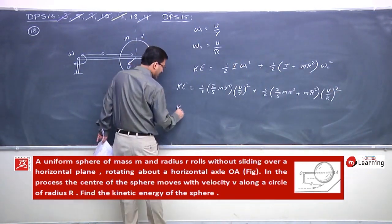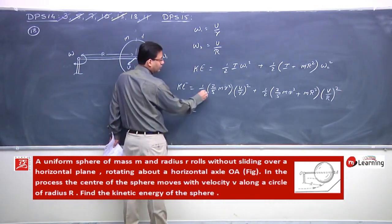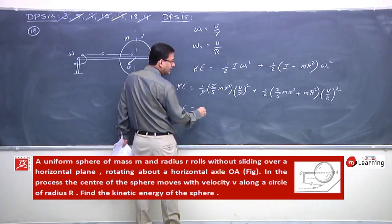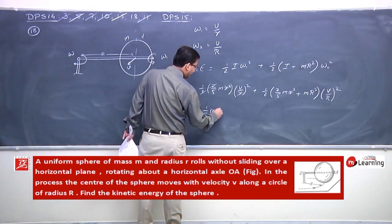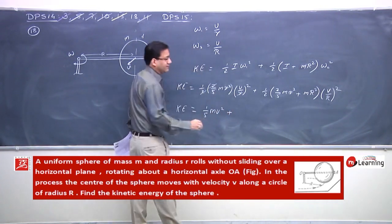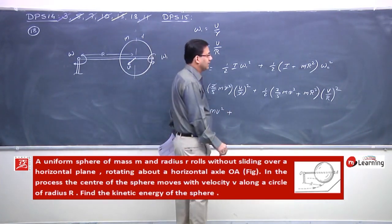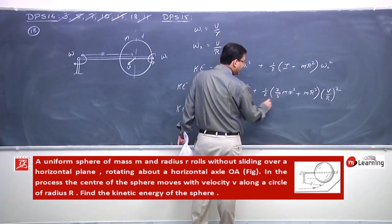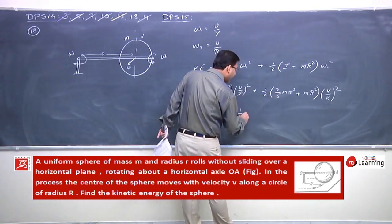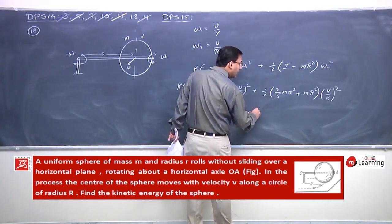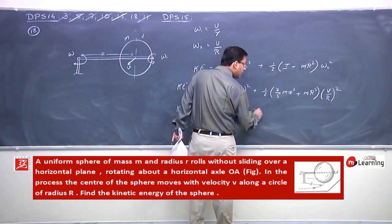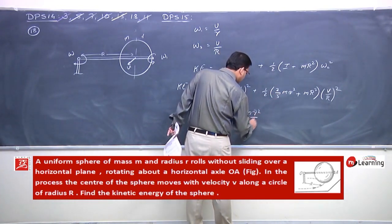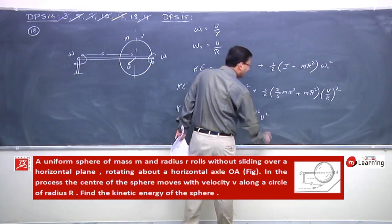So yaha ho gaya kinetic energy is equal to 2 se 2 cancelled, r square r square cancelled, 1 by 5 m v square plus. Idhar hum kahenge 2 se 2 cancelled, 1 by 5 m r square by capital R square into v square.